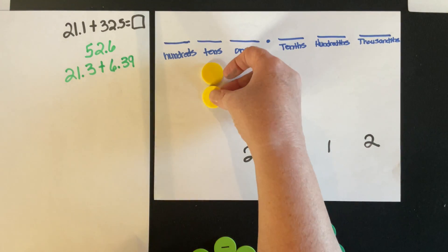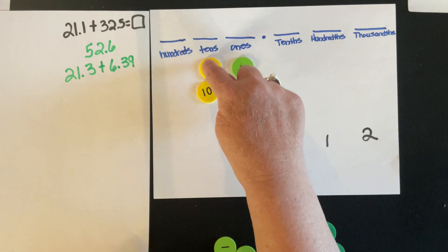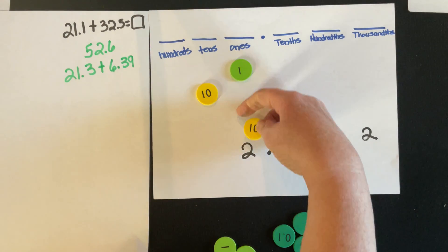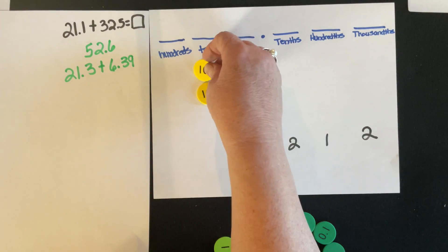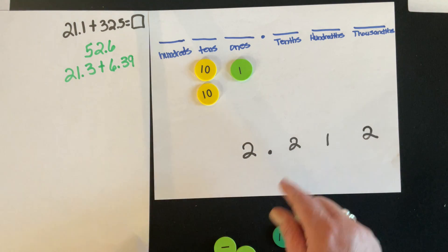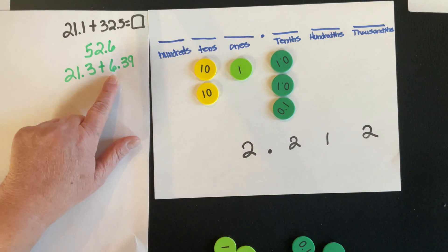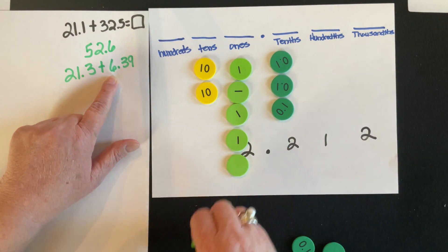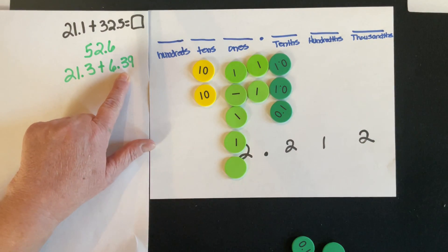So I have 21 — two tens and one. Remember, if I traded a ten over to the ones column, I would need ten green discs; each ten is worth ten ones. So ten and ten and one makes twenty-one. Then I place three tenths for the 0.3. Now joining it with six ones — I'll build those in a ten-frame arrangement — and then three tenths from the 0.39.